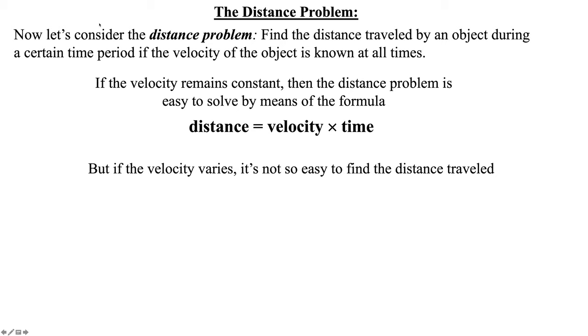If the velocity remains constant, then the distance problem is easy to solve by means of the formula, distance equals velocity times time. You may have seen this as distance equals rate times time. But if the velocity varies, it's not easy to find the distance traveled. Unless we use calculus.